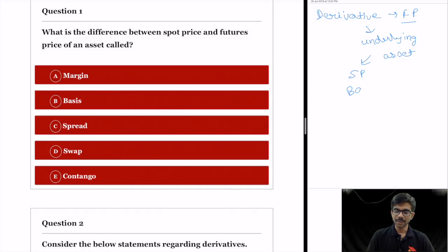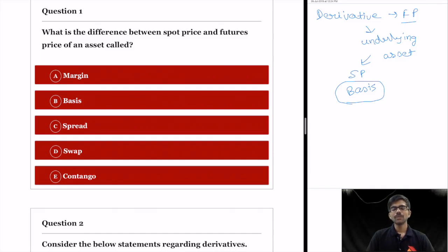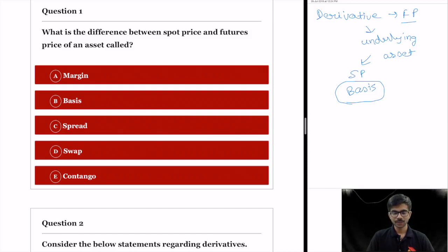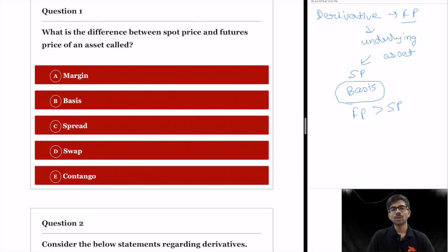The difference between spot price and futures price is called basis, or also called cost of carry. The correct option is option B. Some other relevant terms: margin is the money required to be deposited upfront when entering into a derivative contract — it acts as a security. Spread is the difference between two futures prices. Swap is a derivative contract. Contango means when the futures price is more than the spot price. So the correct answer here is basis, option B.